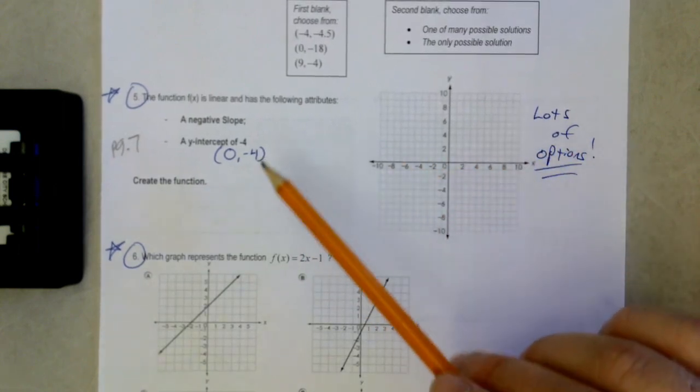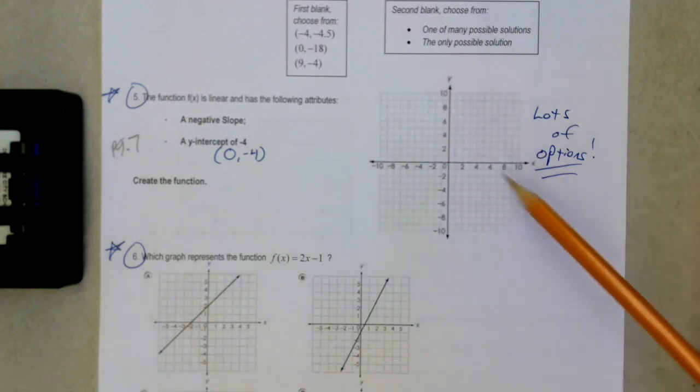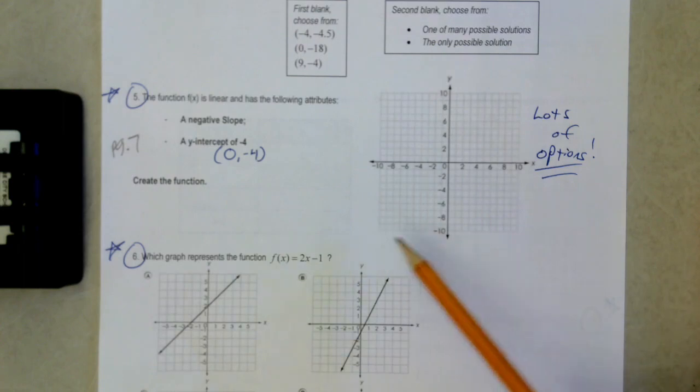The first attribute is a negative slope. So for it to have a negative slope, that means it is going down left to right. So it's kind of like reading a book. We read from left to right, so a negative slope is going down.